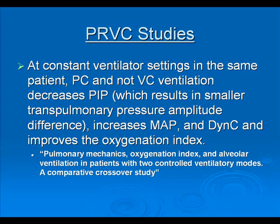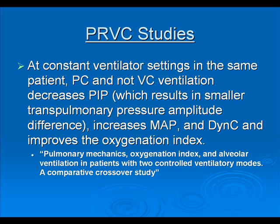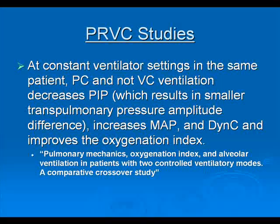Other PRVC studies show that at constant ventilator settings in the same patient, pressure control and volume control ventilation decreases in peak inspiratory pressures result in smaller transpulmonary pressures. There is an increase in mean airway pressure and dynamic compliance and improvement in the oxygen index. When working to provide the lowest possible pressures with a decelerating flow rate, there are potential advantages. For example, increasing mean airway pressure — we know that going from a volume mode to a pressure mode increases the area under the pressure curve, and increasing mean airway pressure is one technique that can help improve oxygenation.